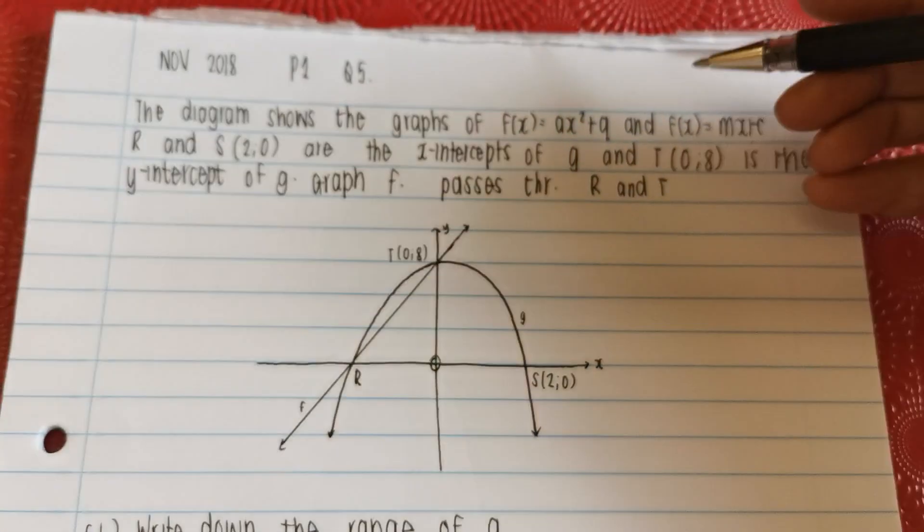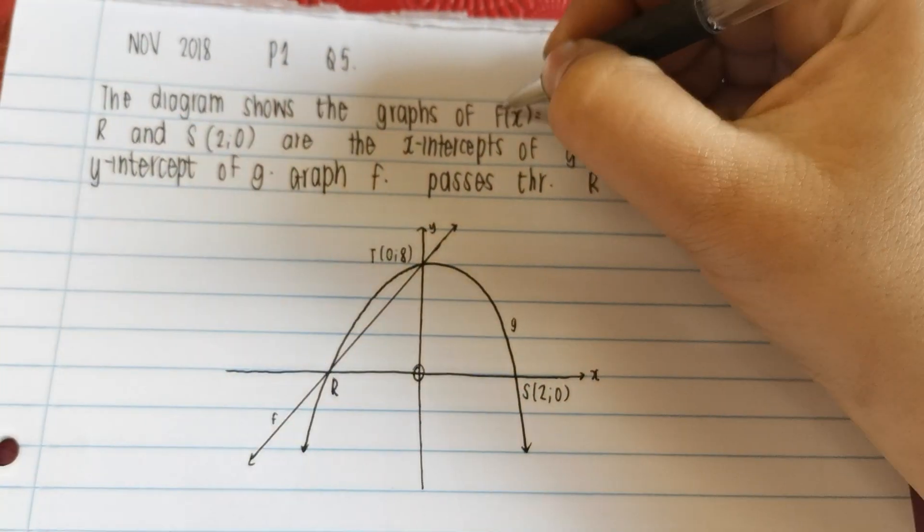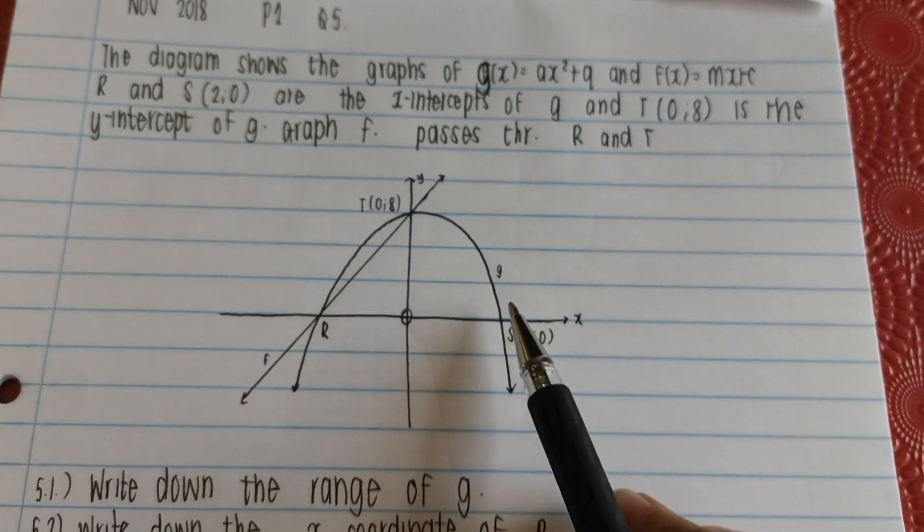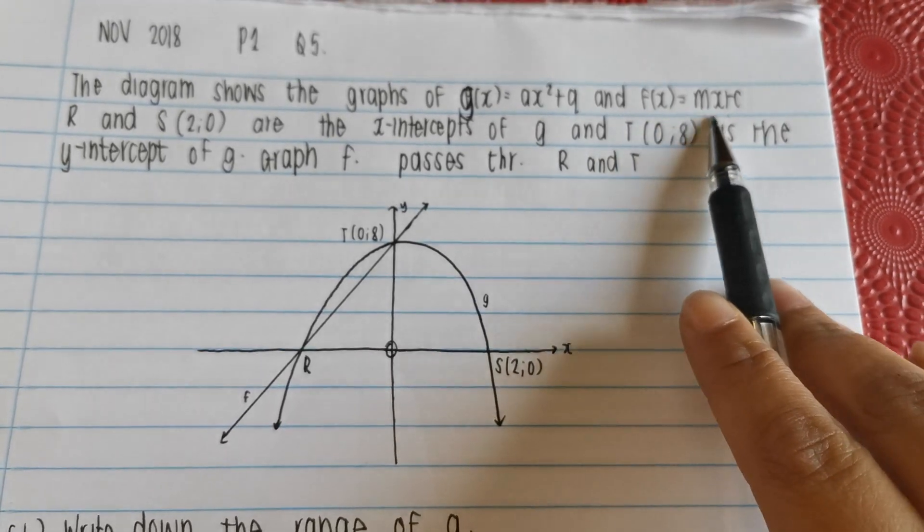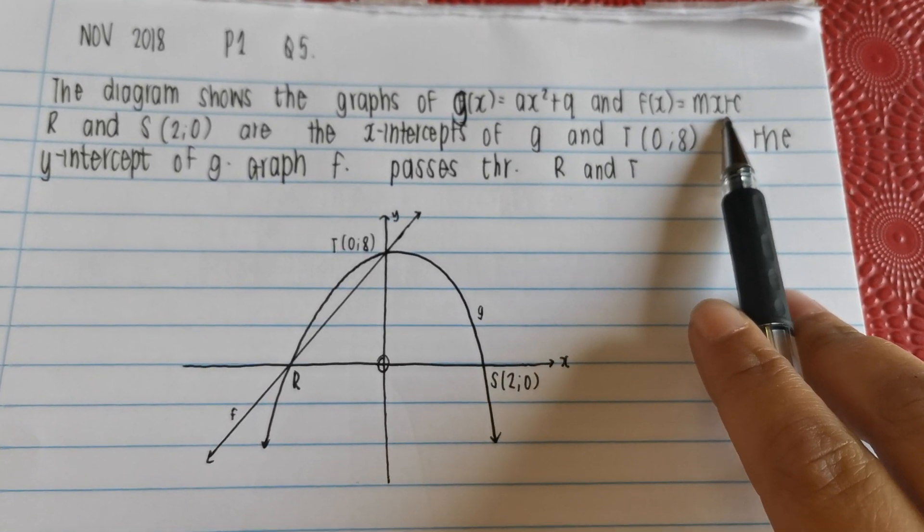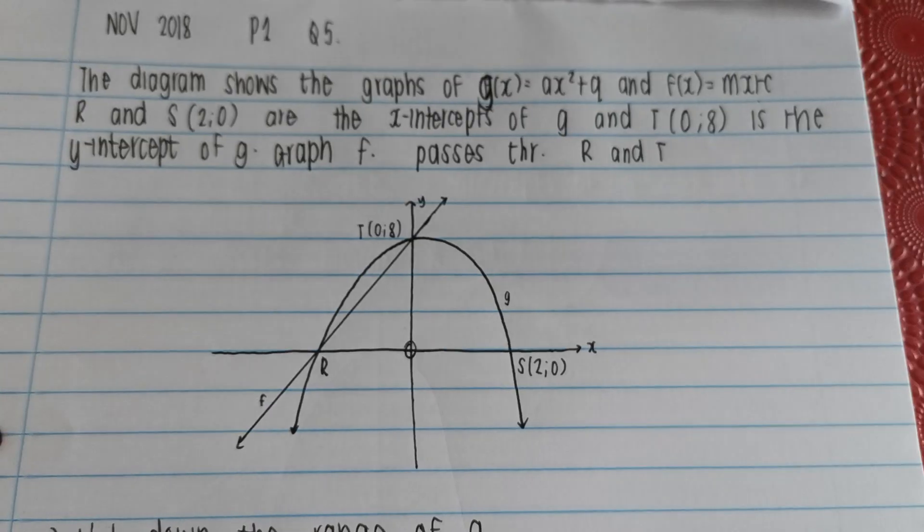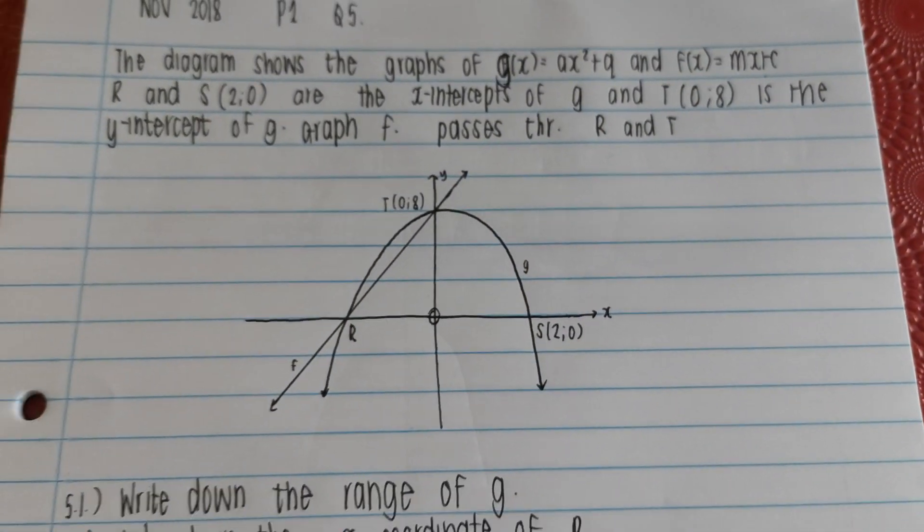And we've got, oh sorry, this one here was supposed to be, I labeled it wrong. This one is supposed to be g(x), my bad. g(x), and this one here is f(x), which is mx plus c. Just looking at this, we know that this is a straight line. Gradient y-intercept.